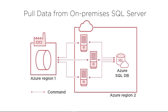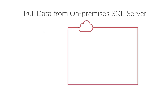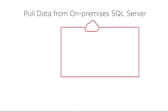Previously we executed packages that dealt with public cloud data stores like Blob Storage or Azure SQL Database. But what if your package needs to pull data from an on-premises data store like SQL Server? In that case, the existing architecture will not work and we need to make a few changes to let the Azure SSIS integration runtime talk to your SQL Server in the private on-premises network.